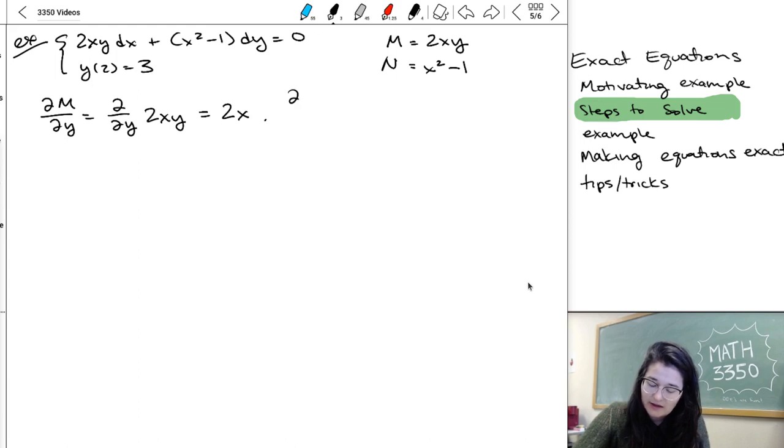And then we're going to take the partial derivative of n with respect to x. n was the thing that multiplied by dy. So that's d/dx of x squared minus 1, and that's going to be 2x. And so again, we have that those two partial derivatives are equal, so we know that this is an exact equation.